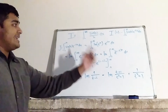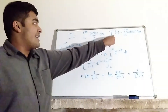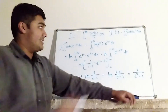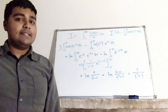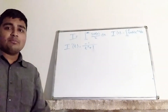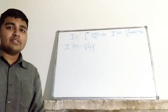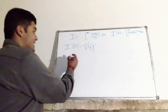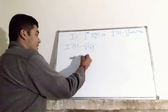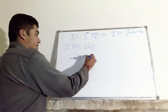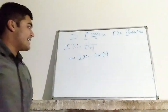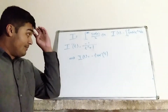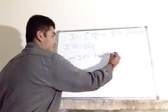Now that I have J, I can work out I'(t) — it's simply minus J. So I'(t) equals minus 1 over (t squared plus 1). Integrating this standard integral gives I(t) equals minus arctan(t) plus a constant.